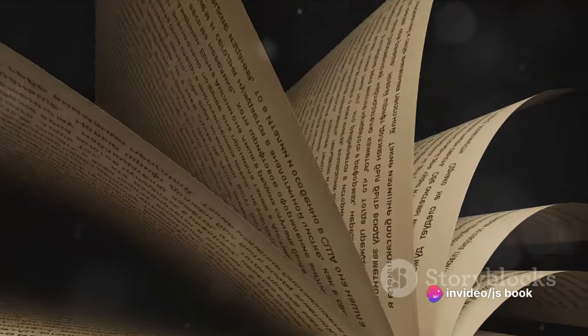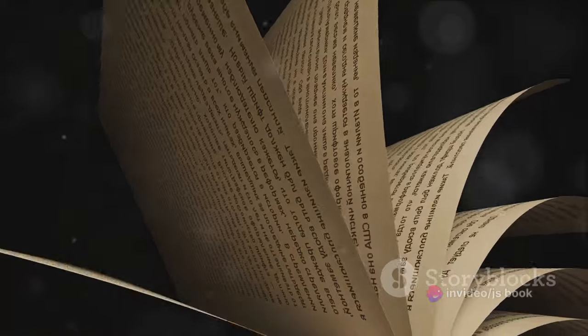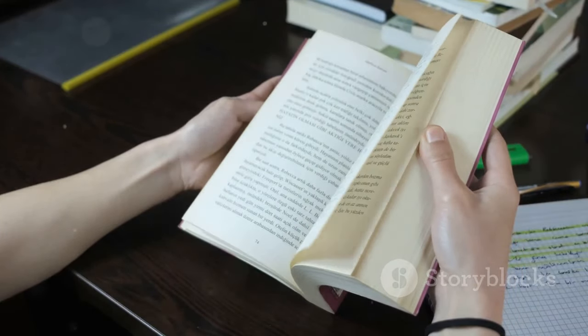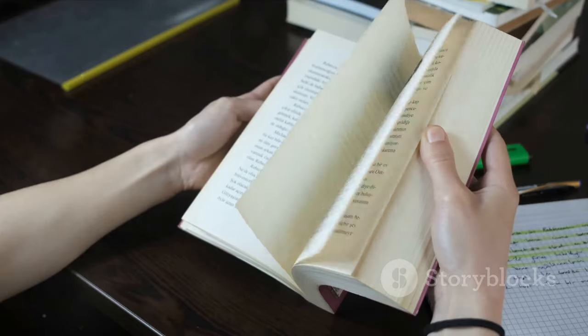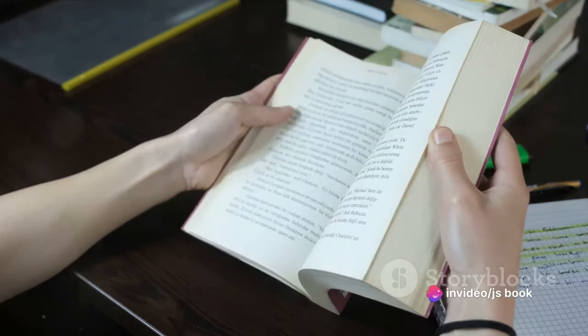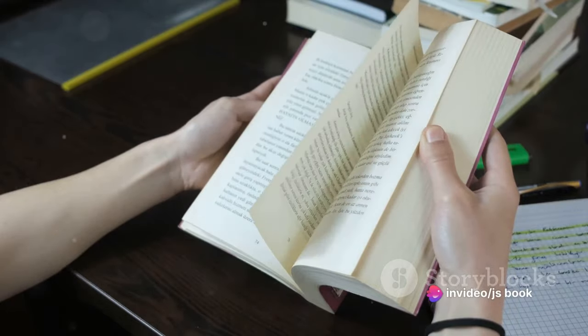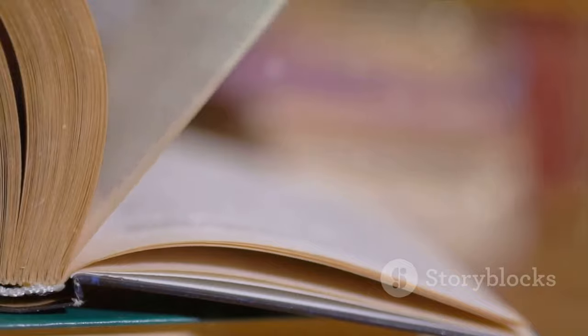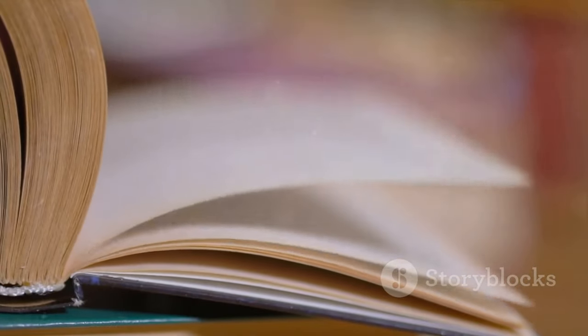They are tasked with unraveling the tangled threads of this case. Their distinctive personalities, Moran's quiet determination and Conway's fiery resolve, are the first brushstrokes in a rich tapestry of characters. Yet, as they dig deeper, the mystery only seems to thicken. Clues are scarce, and the suspects are many, each with their secrets and lies. As the first chapter closes, we are left with more questions than answers.